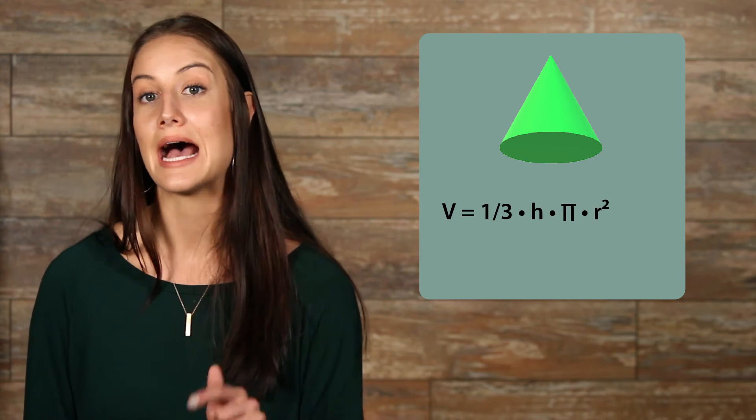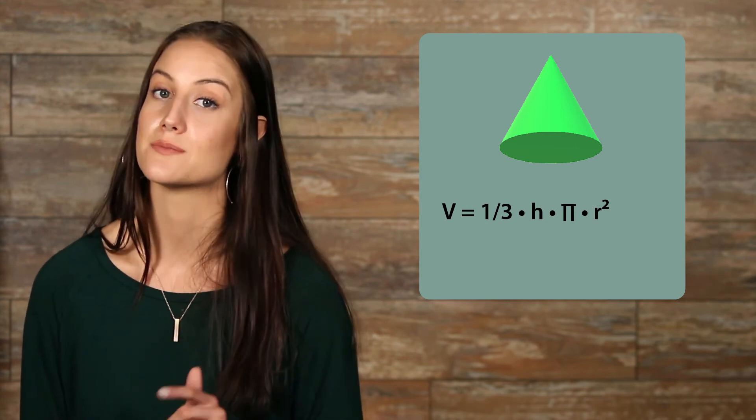Volume of a cone. The formula for volume of a cone is very similar to the formula for the area of a circle. However, there are two things added to the formula. To find the volume of a cone, you multiply times 1 third and times the height, because now you have a height because you're working with a three-dimensional shape. This makes the formula for the volume of a cone volume equals 1 third times height times pi times r squared.